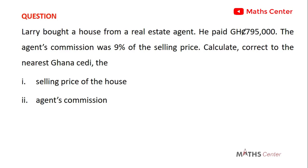Usually when people want to buy properties like a house, a car, or land, they employ the services of agents. These agents act as middlemen between the buyer — the one who wants to buy the property — and the seller, the one selling the property. So we have the buyer, the agent, and the seller.